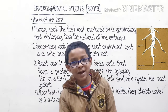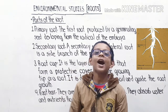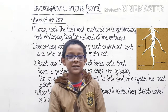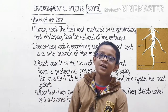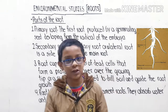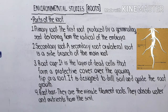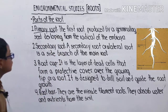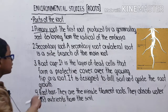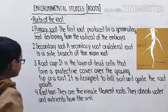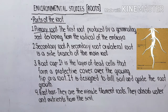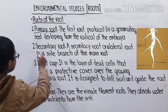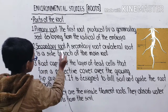Hello friends, welcome to my channel Study with Karthik. Today we study Environmental Studies — roots. Let's continue from the previous video. Today we study about the parts of the root. There are four parts of the root: primary root, secondary root, root cap, and root hair.